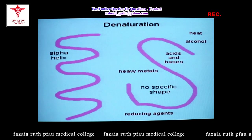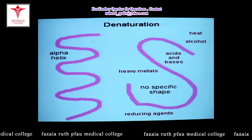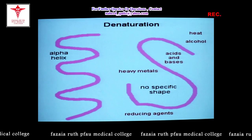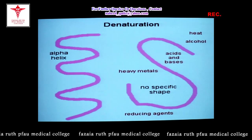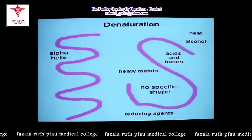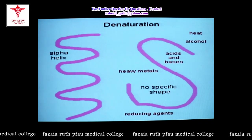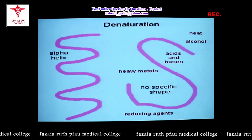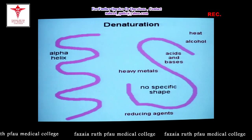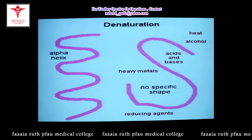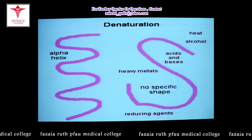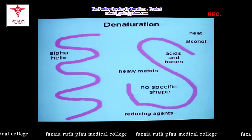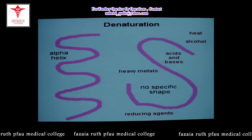Denaturation does not allow the protein to form its proper structure and therefore destroys its function. A protein with only its primary structure cannot be functional. To be functional, a protein must assume the secondary, tertiary, or quaternary level of structure. Denatured proteins are no longer biologically functional — they are simply in the primary structure of protein.